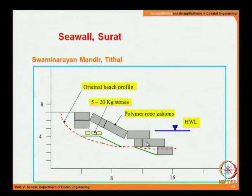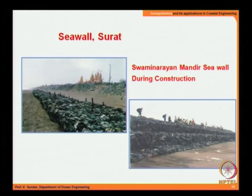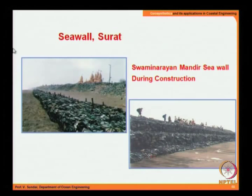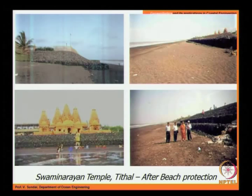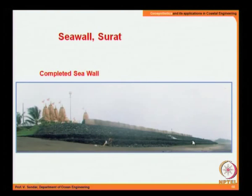Polymer rope gabions were used as the solution. Construction is shown in progress with the gabions being installed, with the sea side visible. Construction has started and progressed to partial completion, with the completed sea wall running for about 300 meters.